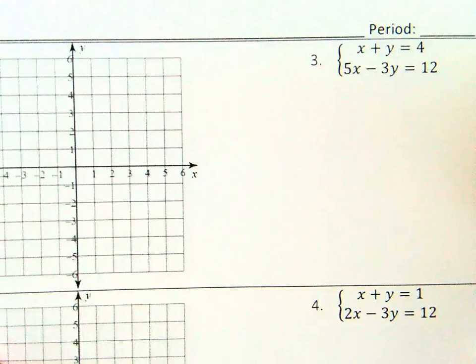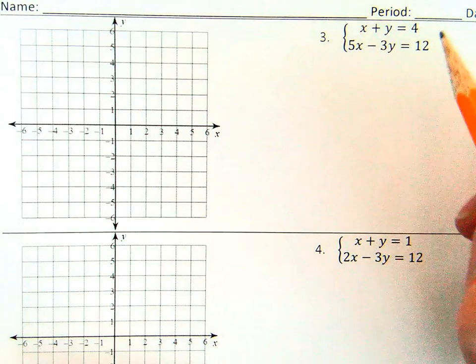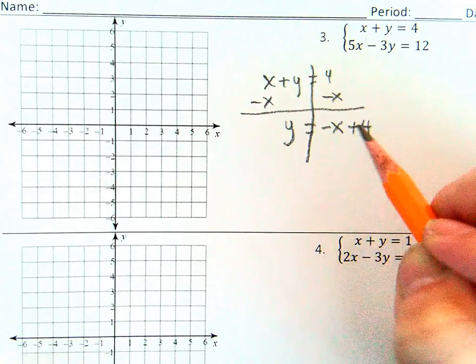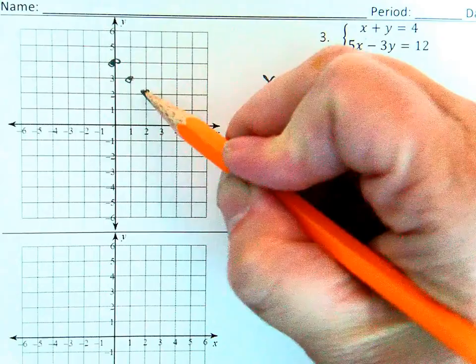In this example, the lines need to be converted to slope-intercept form before they can be graphed. In the first equation, subtract the x-term from both sides. Once y is alone, the equation is in slope-intercept form and can be graphed.